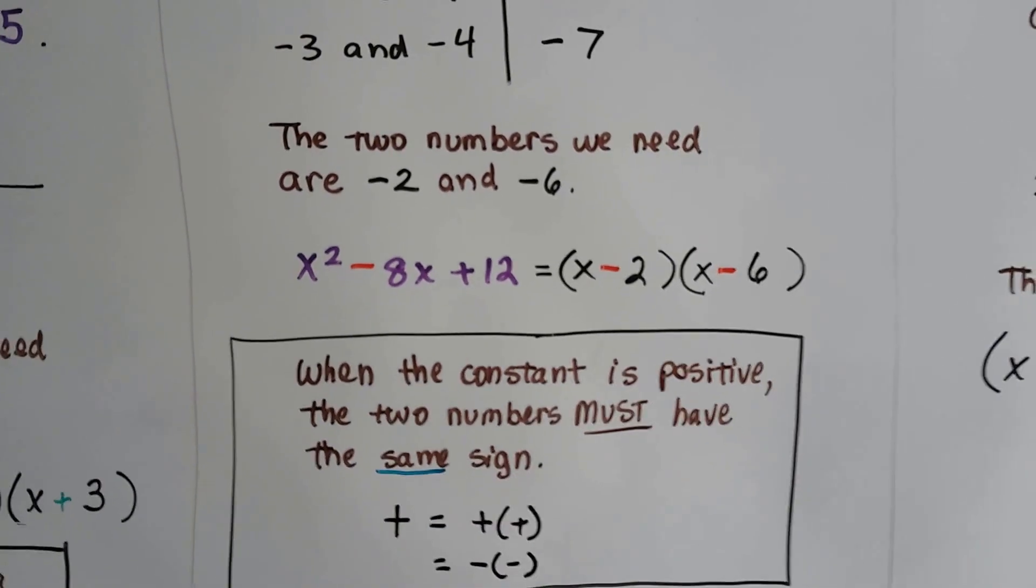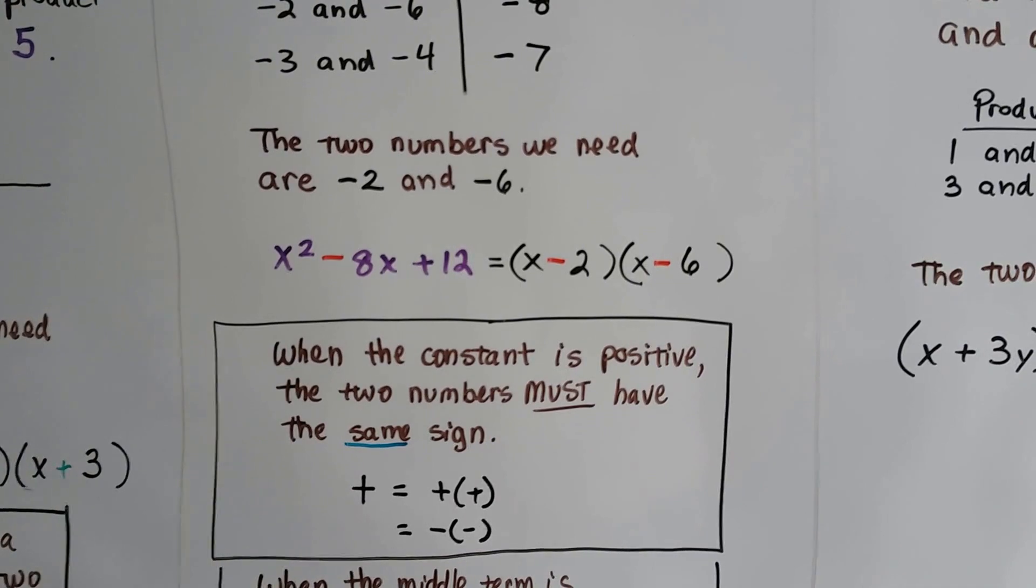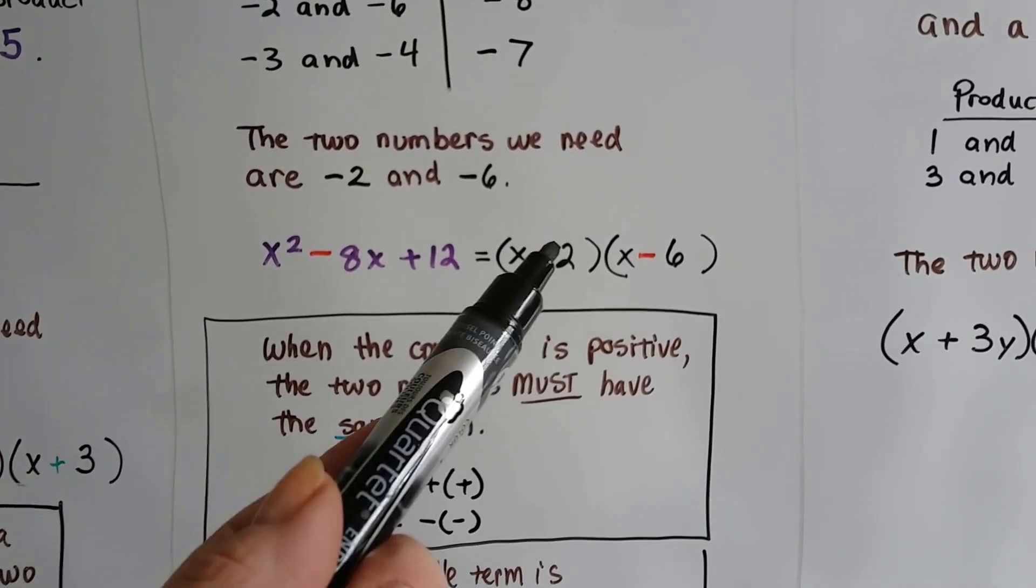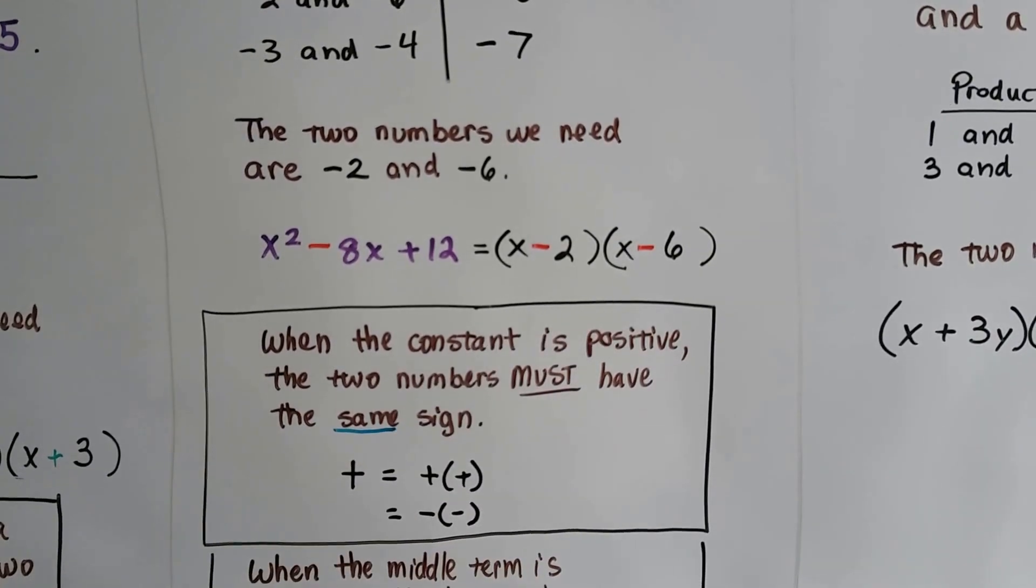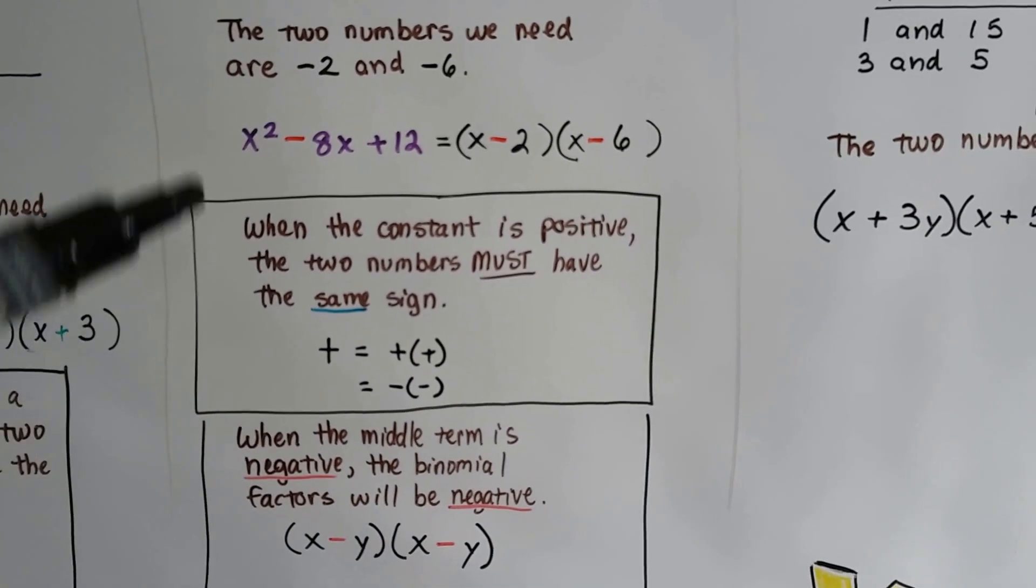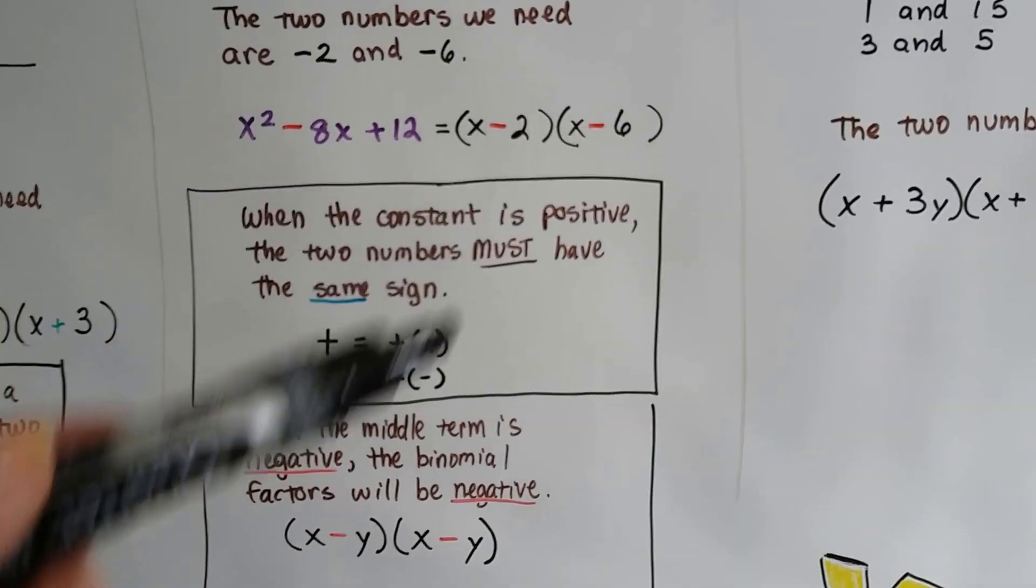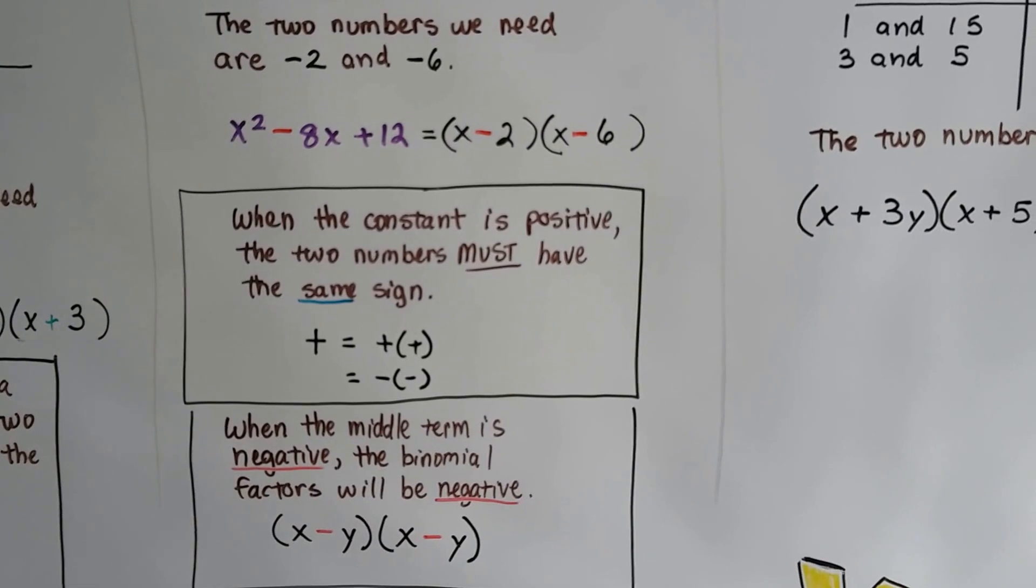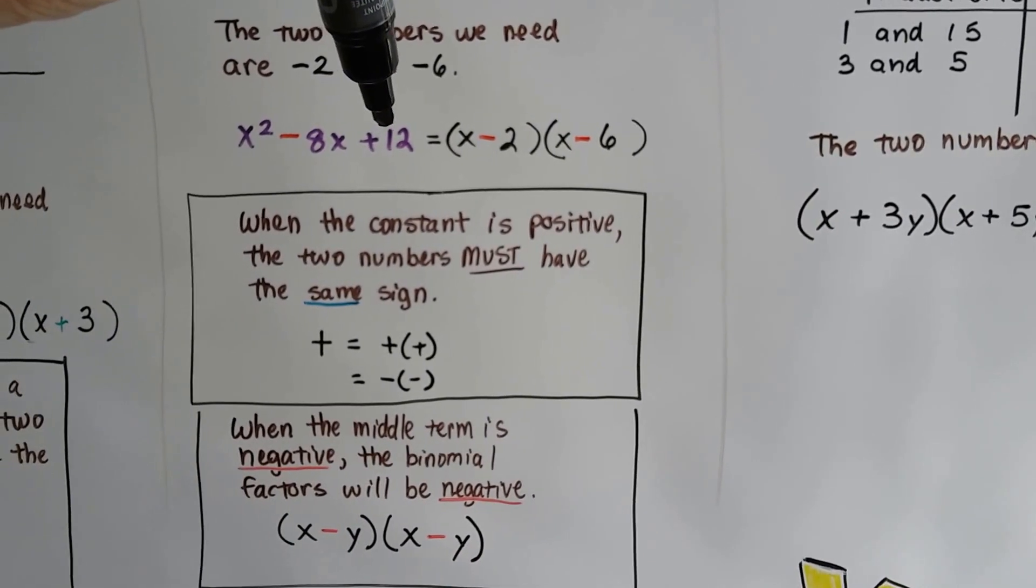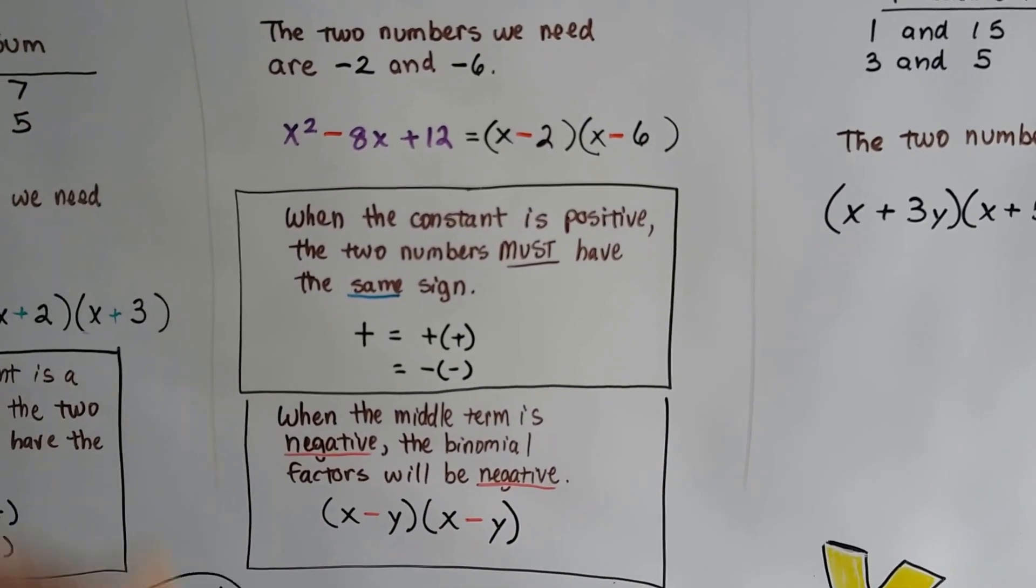So when the constant is positive, see, this 12 is a positive, the two numbers must have the same sign. But when this one is negative, then we know they both have to be negative. Does that make sense? When the middle term is a negative, we know that the binomial factors are going to be negative. When this term in the back is a positive, we know they both have to be the same, whether negative or positive. And that's going to come into play in our next video.